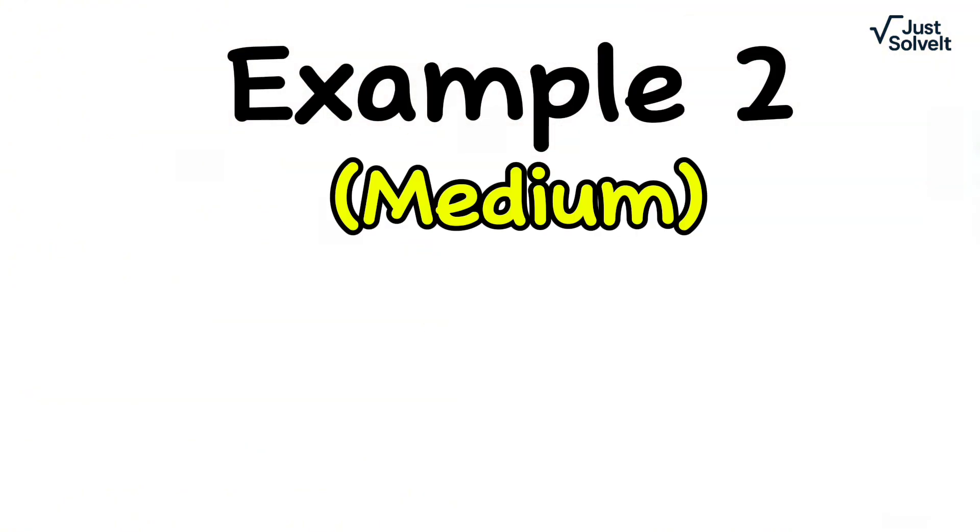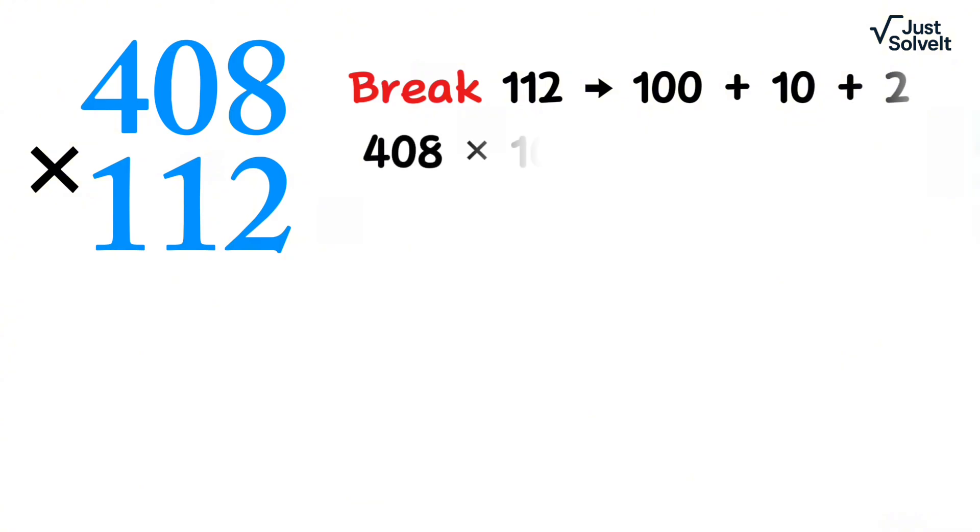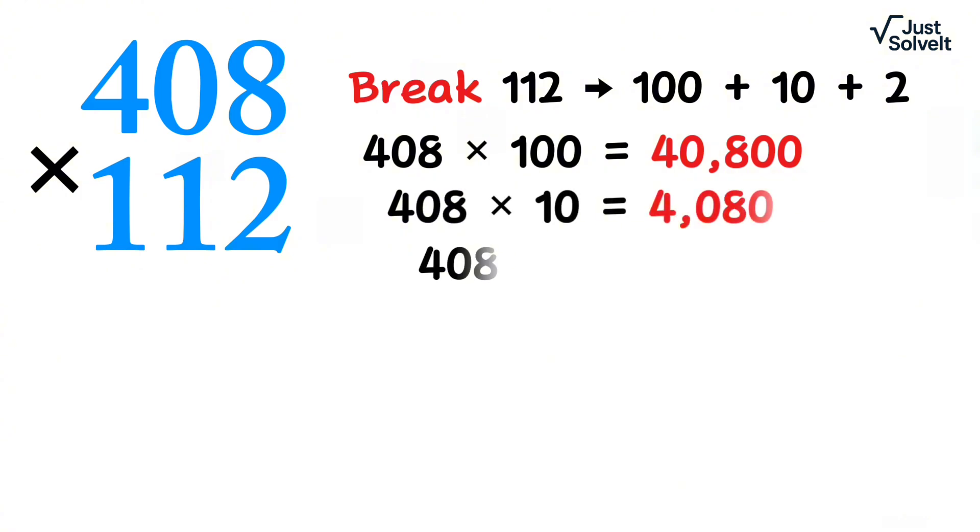Example 2, medium. 408 times 112. Break 112 into 100 plus 10 plus 2. 408 times 100 equals 40,800. 408 times 10 equals 4,080. 408 times 2 equals 816.